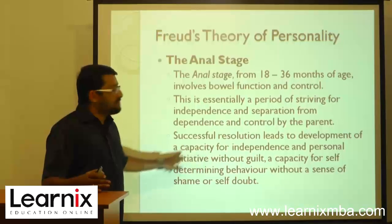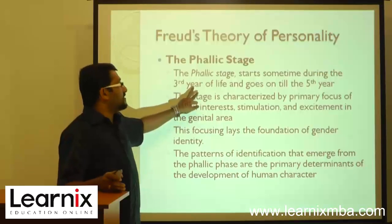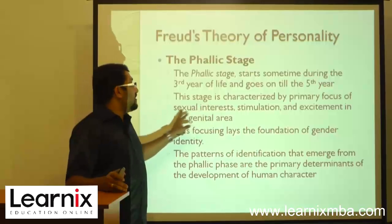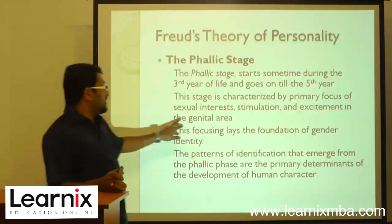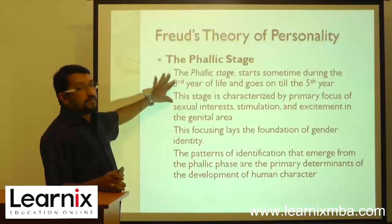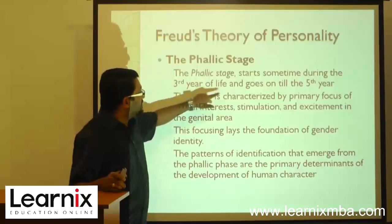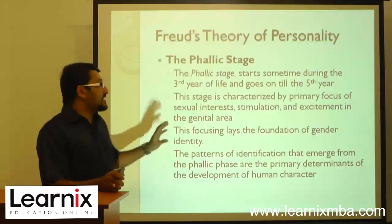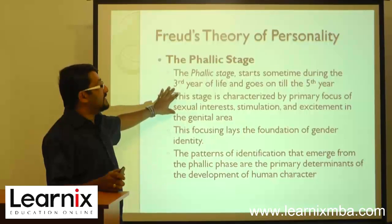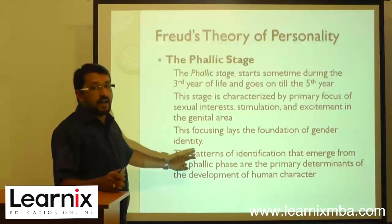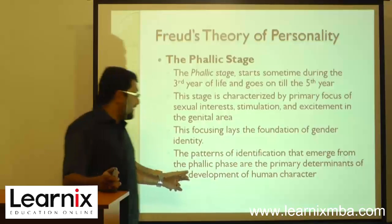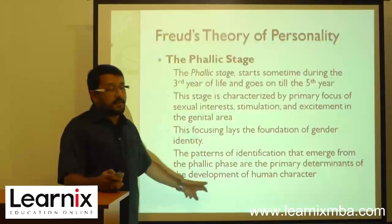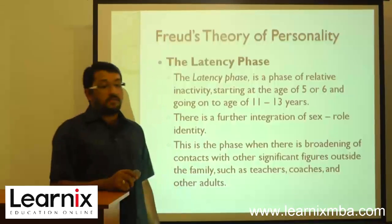The phallic stage starts sometime during the third year of life and continues until the fifth year. This stage is characterized by a primary focus on sexual interest, stimulation, and excitement in the genital area. During this time, the child begins to understand the difference between being a boy or a girl. This focus lays the foundation for gender identity, and the patterns of identification that emerge from the phallic phase are the primary determinants of the development of human character.